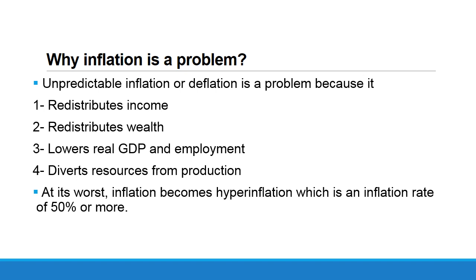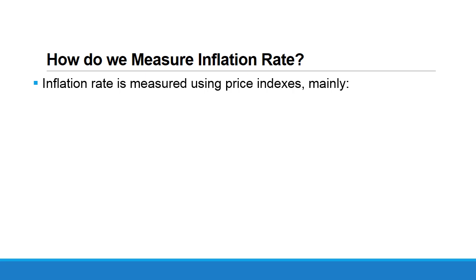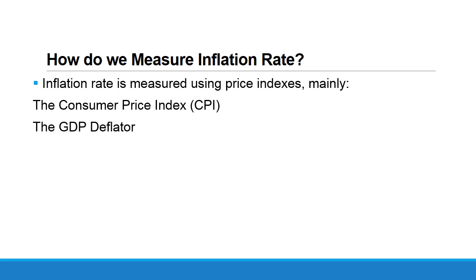Now we turn to another question: how do we measure the inflation rate in any country? To measure the inflation rate, we need a measure for the overall price level. This measure is known as the price index. Inflation rate is measured using price indexes. We are going to focus on two main price indexes: number one, the Consumer Price Index (CPI), and number two, the GDP deflator.